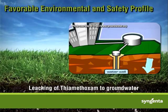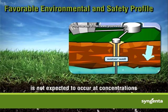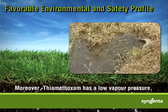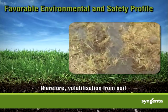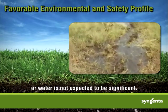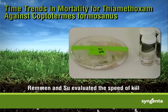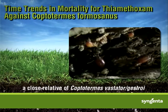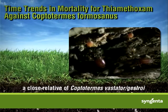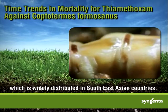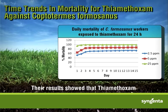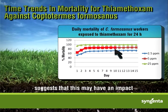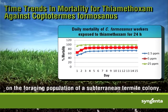Leaching of thiamethoxam to groundwater is not expected to occur at concentrations that may raise any toxicological or ecotoxicological concerns. Moreover, thiamethoxam has a low vapor pressure; therefore, volatilization from soil or water is not expected to be significant. Remen and Sue evaluated the speed of kill of thiamethoxam against Coptotermes formosanus, a close relative of Coptotermes vastator gestroy, which is widely distributed in Southeast Asian countries. Their results show that thiamethoxam is slow acting at 5 parts per million and suggests this may have an impact on the foraging population of a subterranean termite colony.